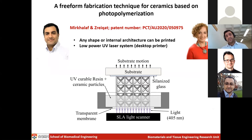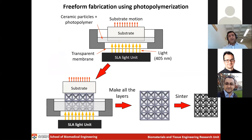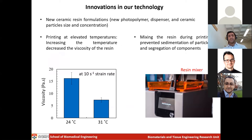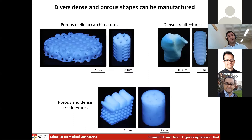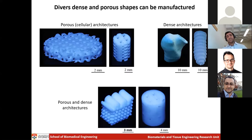At Hala's lab I developed a technique based on photopolymerization to solve these challenges. Any shape and architecture can be made, circumventing the limitation of robocasting, and a low-power UV laser system is used — I basically used a four-thousand-dollar desktop printer to develop the technology. We can now make any porous or solid structure in any shape: porous structures for bioceramic scaffolds, dense architectures for biomedical devices, high-temperature applications, or armor applications, or combinations of dense and porous. We are not limited to any shape or internal architecture, with a minimum feature size currently around 300 micrometers.